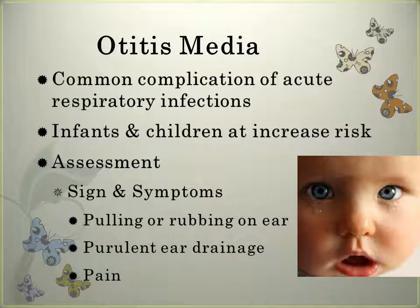Otitis media is a common complication of acute respiratory infections. It is an infection of the middle ear resulting from a blocked eustachian tube that prevents normal drainage. Infants and children are at increased risk because their eustachian tubes are shorter, wider, and straighter. We treat it by encouraging fluids, using local heat for pain, lying on the affected ear. Medications might include analgesics or antipyretics, and sometimes antibiotics. Ear tubes might be required if they have repetitive ear infections.